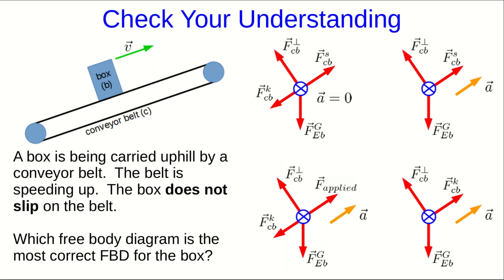Well, the box isn't slipping, and so the type of friction must be static. And to get this acceleration up the slope, that static friction has to point up the slope. And so this one is correct.